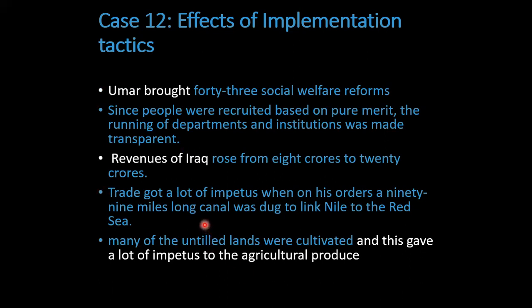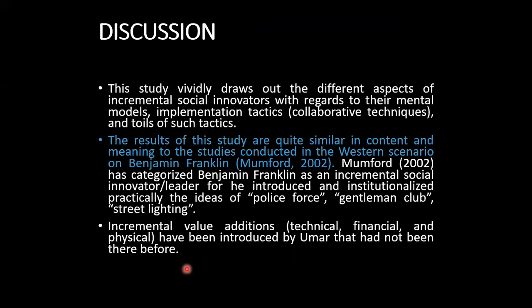In the second case, I discussed the effects of these implementation tactics. To sum up, Umar brought 43 social welfare reforms, and since people were recruited based on pure merit, the running of departments and institutions became very transparent. Revenues of Iraq at that time rose from 8 crores to 20 crores. Trade gained great advantages when, on his orders, a 99-mile-long canal was dug to link the Nile to the Red Sea. Many arid lands were cultivated, giving great advantage to agricultural producers as well.